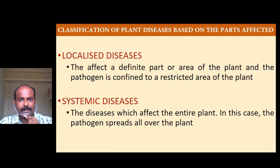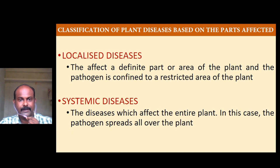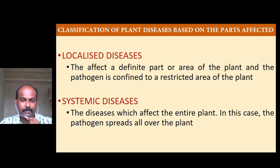We can classify plant diseases based on several criteria. Based on the parts affected, diseases can be classified as localized and systemic. Localized diseases affect a definite part or area of the plant and the pathogen is confined to a restricted area. Systemic diseases affect the entire plant; in this case the pathogen spreads all over the plant.